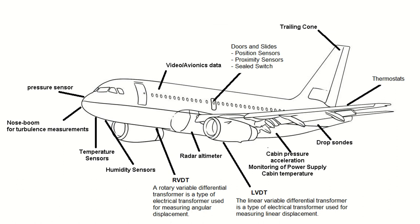We have something very important called RVDT and LVDT. RVDT is a Rotary Variable Differential Transformer, and LVDT is a Linear Variable Differential Transformer. The RVDT is used for measuring angular displacement, while the LVDT is used for measuring linear displacement. If I need to measure displacement from an angular perspective, I use the RVDT; if I need to measure it from a linear perspective, I use the LVDT.